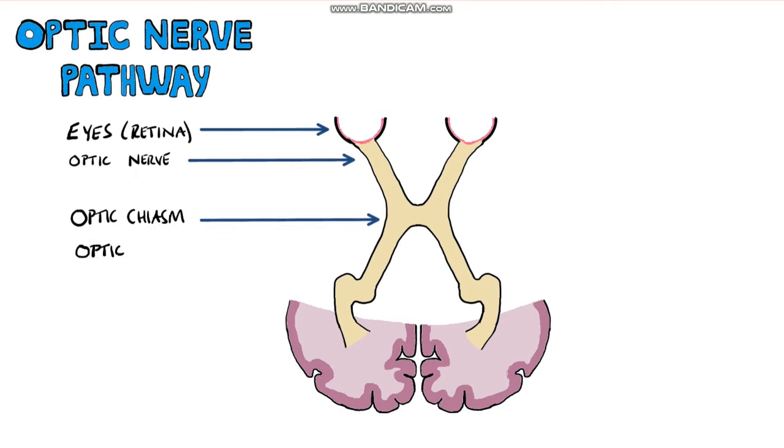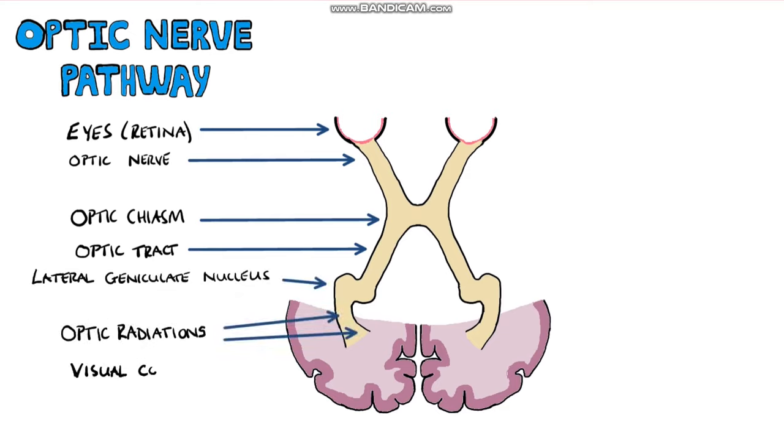From there, we have the optic tracts on each side, leading into the lateral geniculate bodies, followed by the optic radiations that ultimately take the signal to the occipital lobes, where the visual cortex is located and the signal is processed into an image that we see.